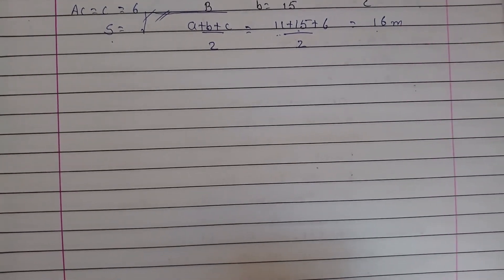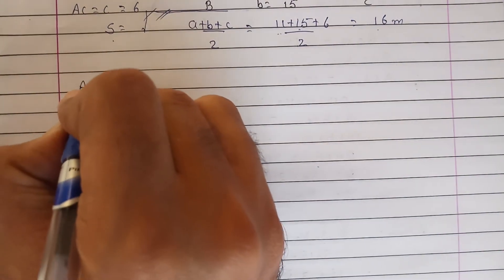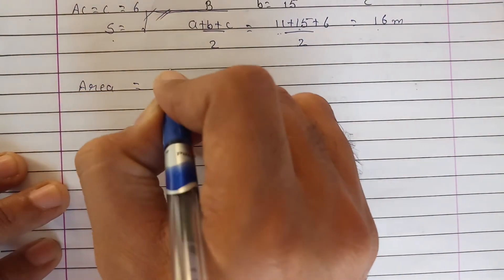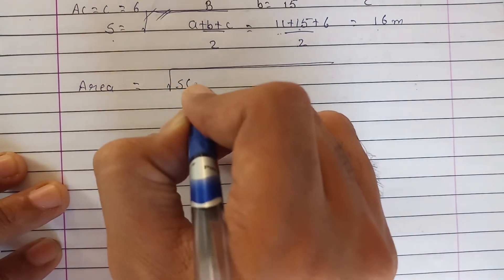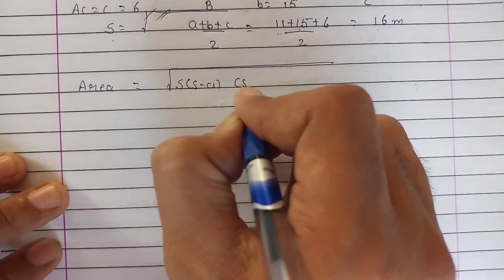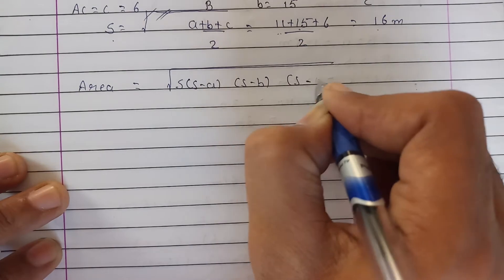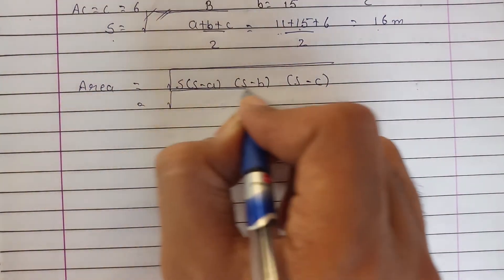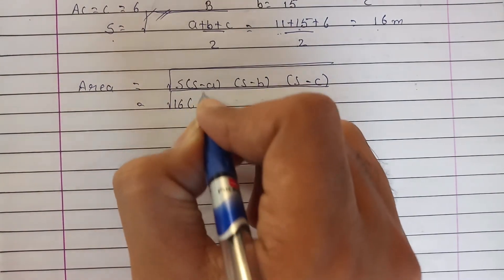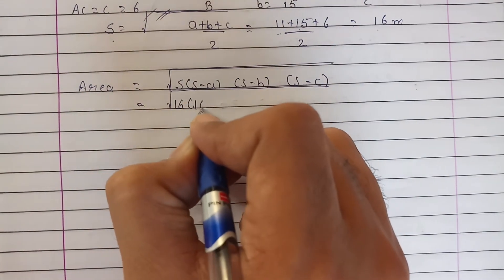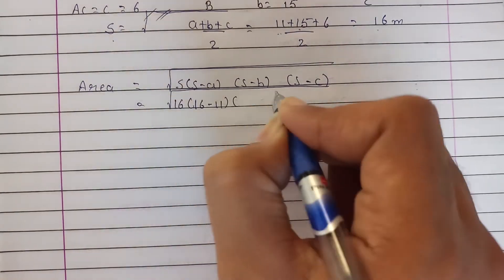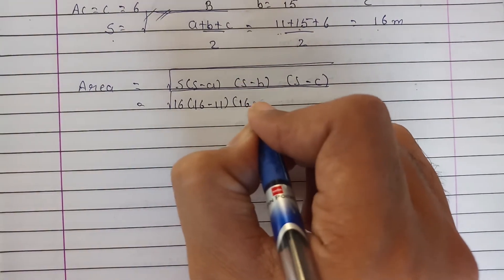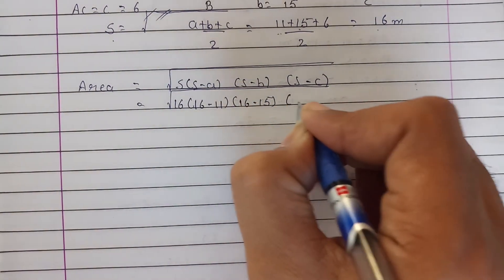Now we can apply the formula for the area. The formula for the area is: square root of s(s-a)(s-b)(s-c). Now let us apply the values. s is 16, s-a is 16-11.